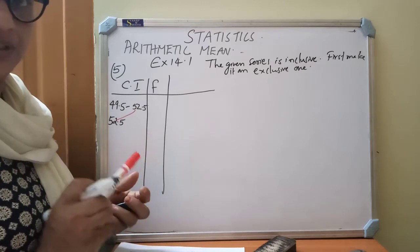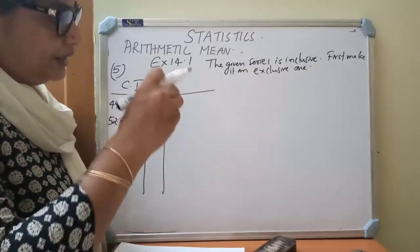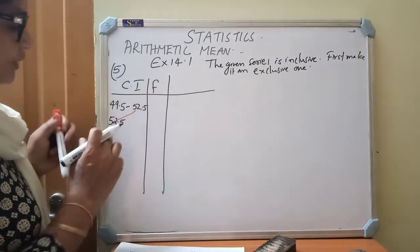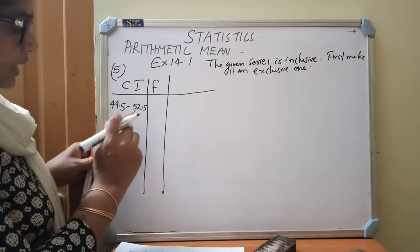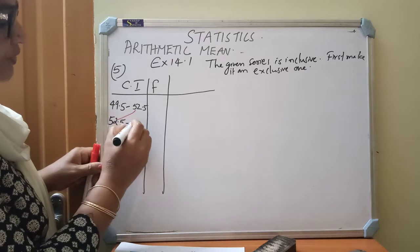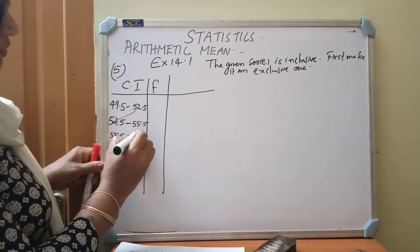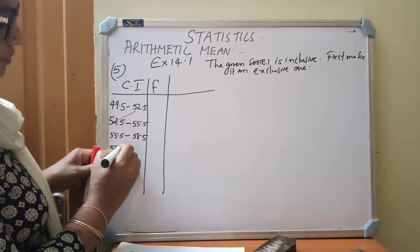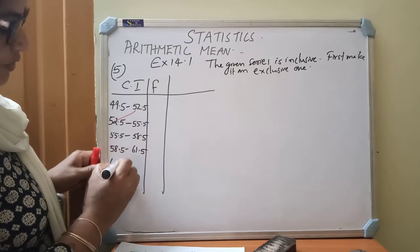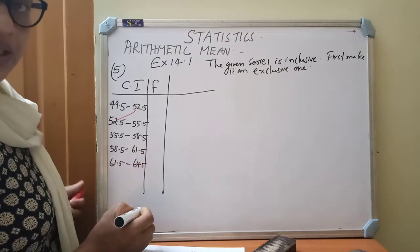First you must make it like this manner. Then only you have to do the sum. If the class intervals are given in inclusive form, you must make it as an exclusive one. Then you have to find out the class mark and FIXI and proceed. 52.5 to 55.5, then 55.5 to 58.5, then 58.5 to 61.5, from 61.5 to 64.5. These are the class intervals they are given.